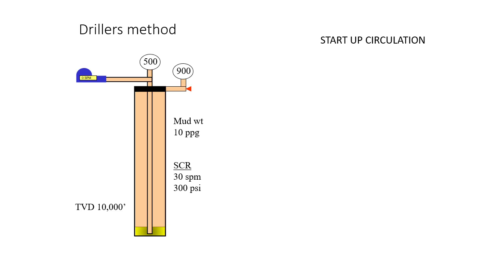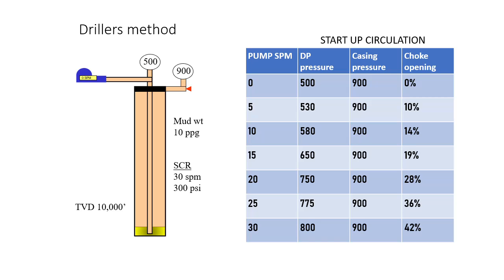To start the driller's method first circulation, increase the pump speed in stages from 0 to 5, and to 10, and so on. Adjust the choke opening accordingly to maintain casing pressure constant.